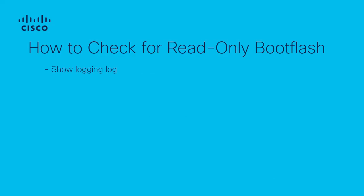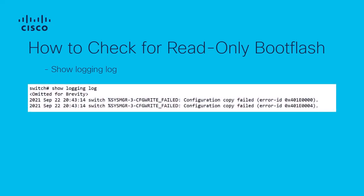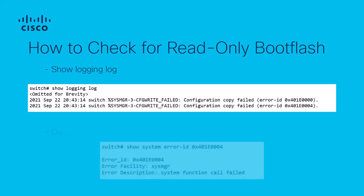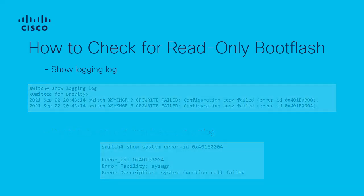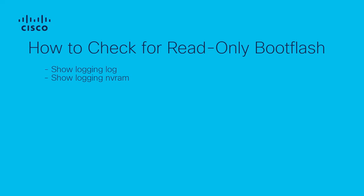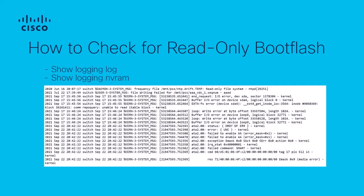Many engineers will see these syslogs while searching for the reason why their copy run start command failed, or will receive alerts for these logs in their email or from their syslog servers. Starting with the indications for the copy run start command failing, you will always find that the logs for the failure correspond to when you actually type the command under show accounting log. The output in the syslog under show logging log will typically look like this around the time when you input the command to save your configuration. If you decode one of those error messages, they will typically mention an error when trying to call system functions. Other logs indicating difficulty in calling system functions or files will also present themselves under show logging log and show logging nvram. They will show as either an inability to mount the file system or as kernel errors.